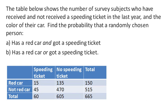If you look at the table here, there are basically four different categories: speeding ticket and red car, no speeding ticket and red car, speeding ticket not red, and no speeding ticket not red. Then we have totals for each of the columns, totals for each of the rows, and then the grand total of everyone surveyed.